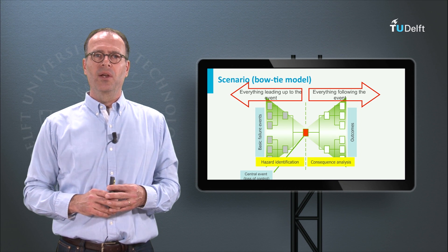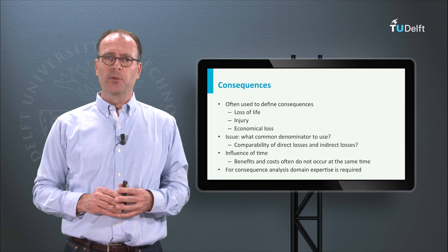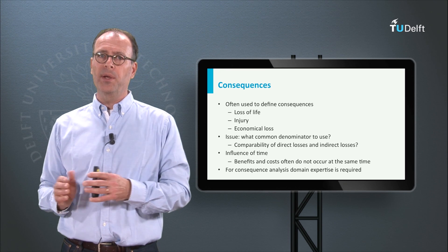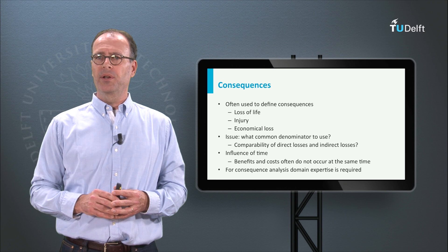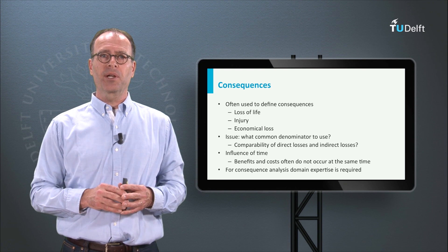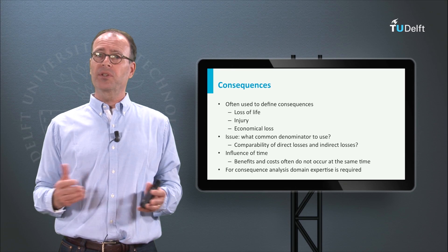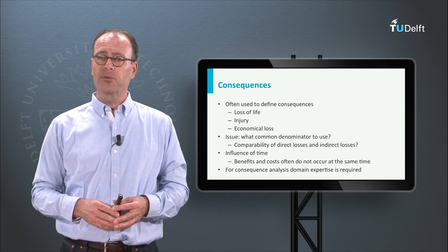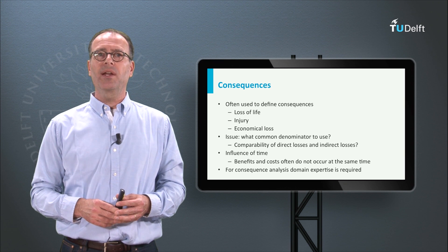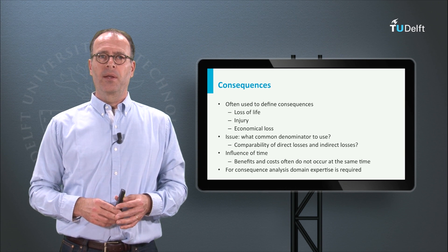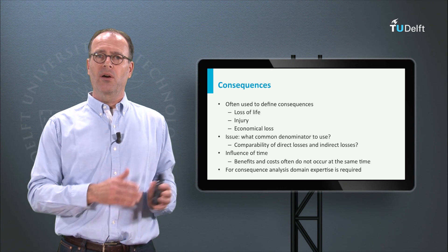In the next step of our risk analysis we look at the consequences. We often define consequences in terms of fatalities, injuries or money. We have to agree on the denominator, otherwise we compare different things. Moreover, what is our time frame? Large accidents bring along consequences that go well into the future. Fatalities often have a large impact on, for instance, families or companies. How to take account of that? To answer these questions one needs to have expertise pertaining to the domain studied.